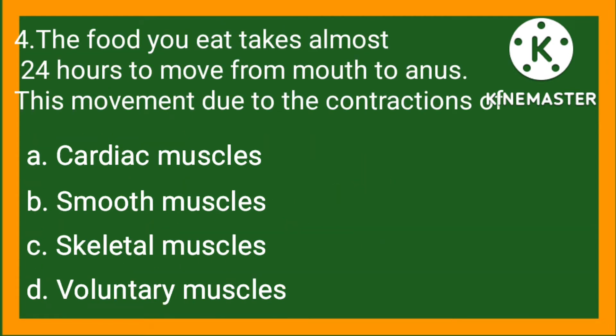Statement number 4. The food you eat takes almost 24 hours to move from mouth to anus. This movement is due to the contractions of option A, cardiac muscles; option B, smooth muscles; option C, skeletal muscles; option D, voluntary muscles. So the right option is B, smooth muscles.